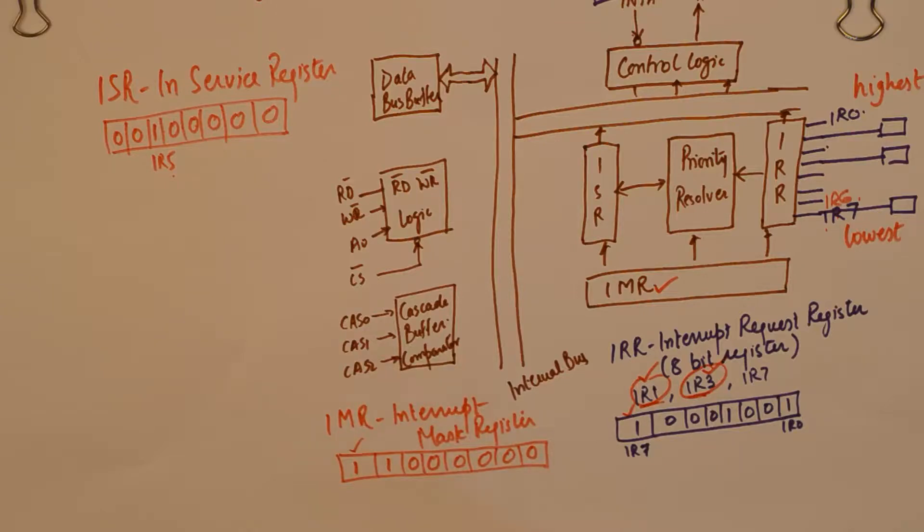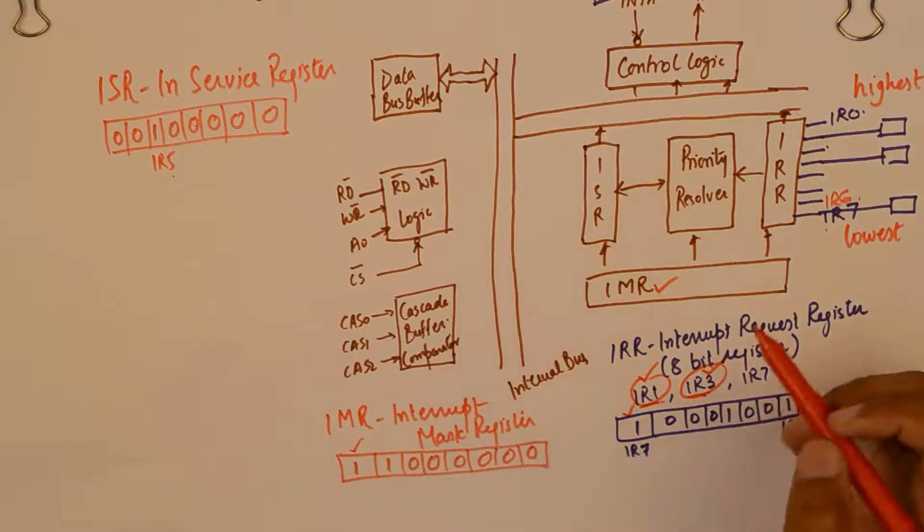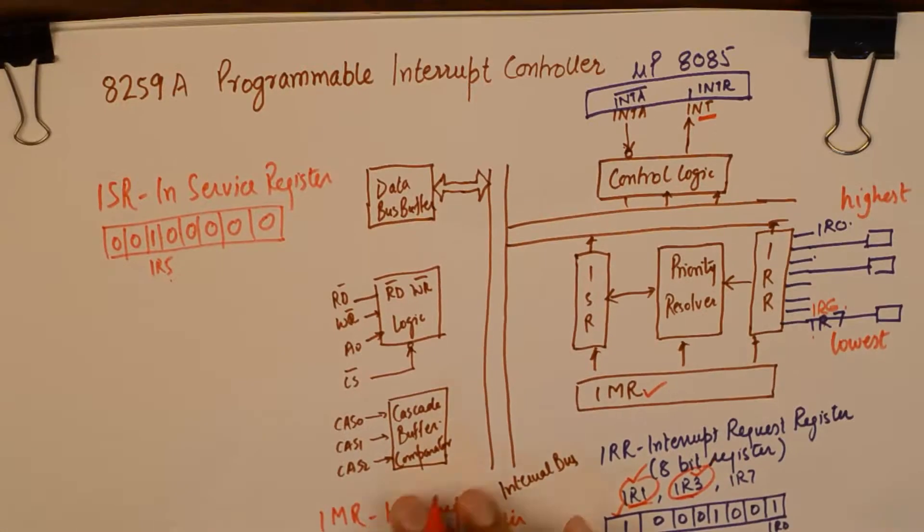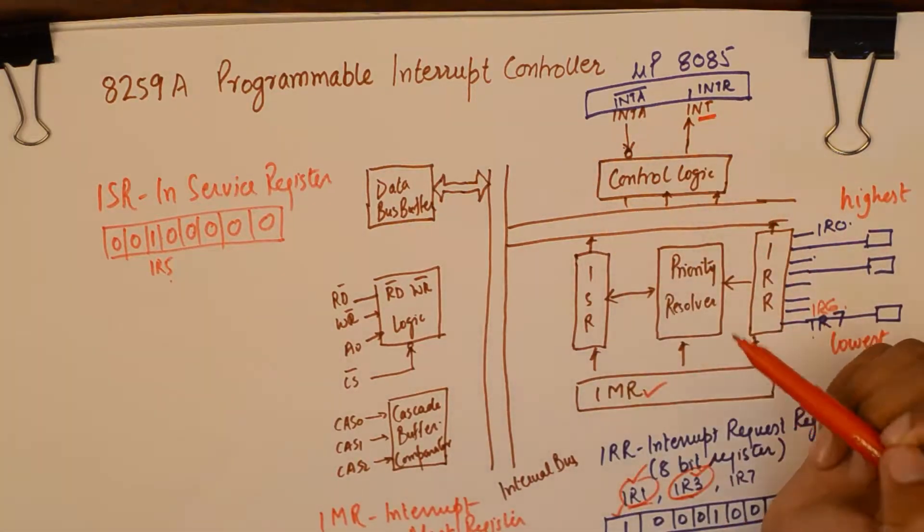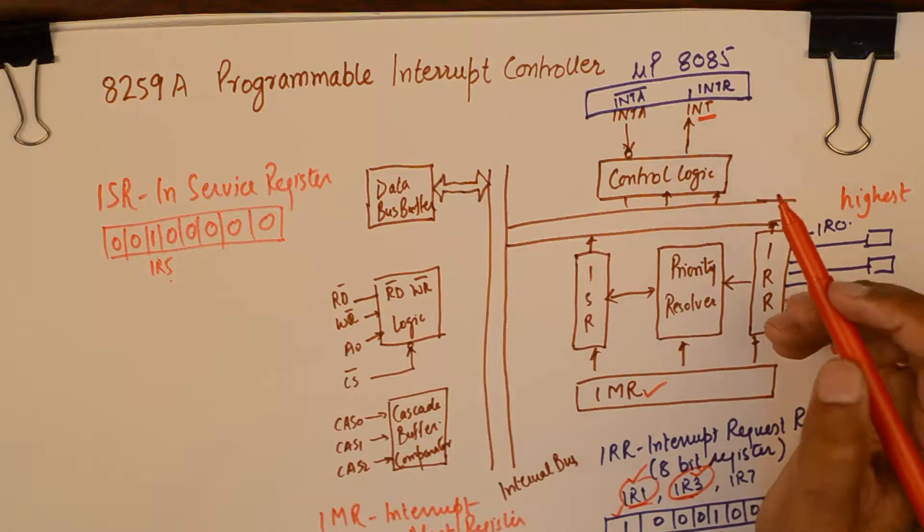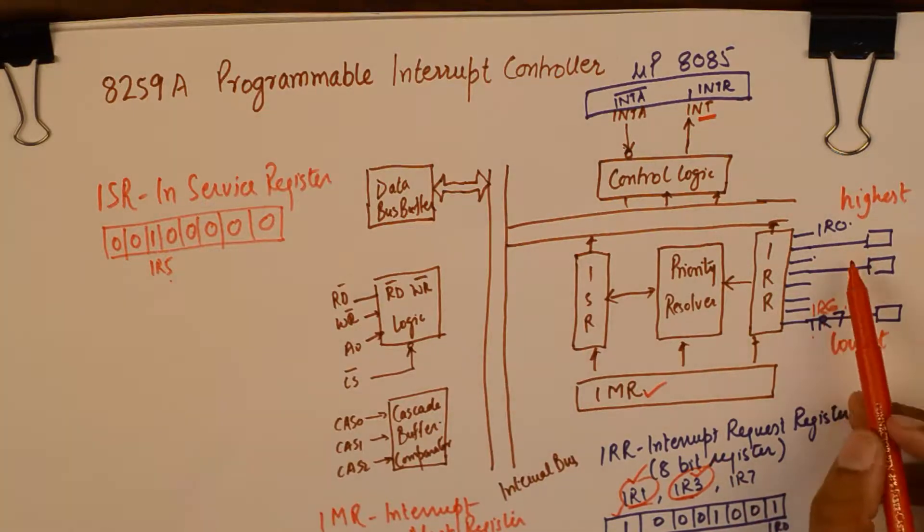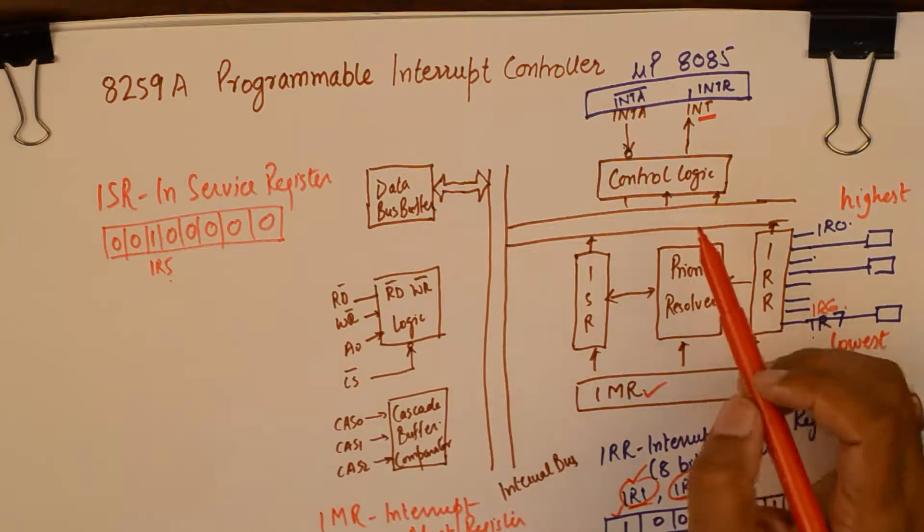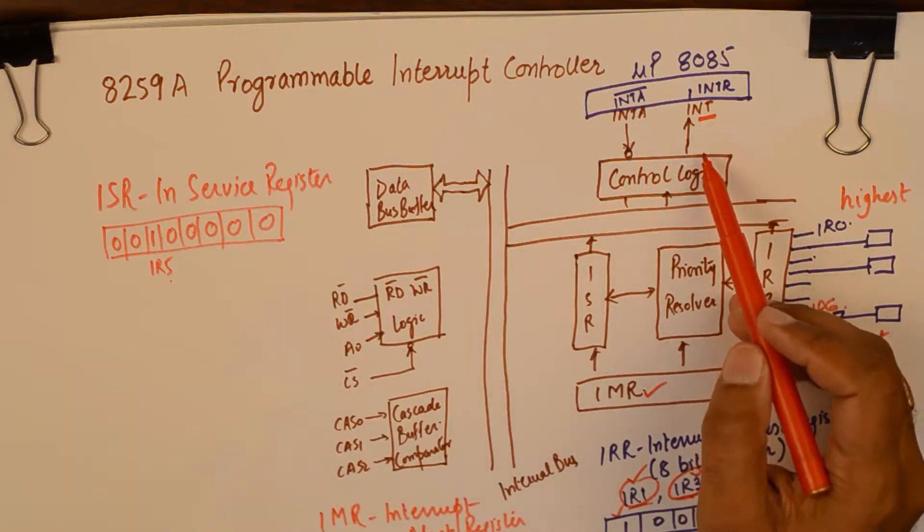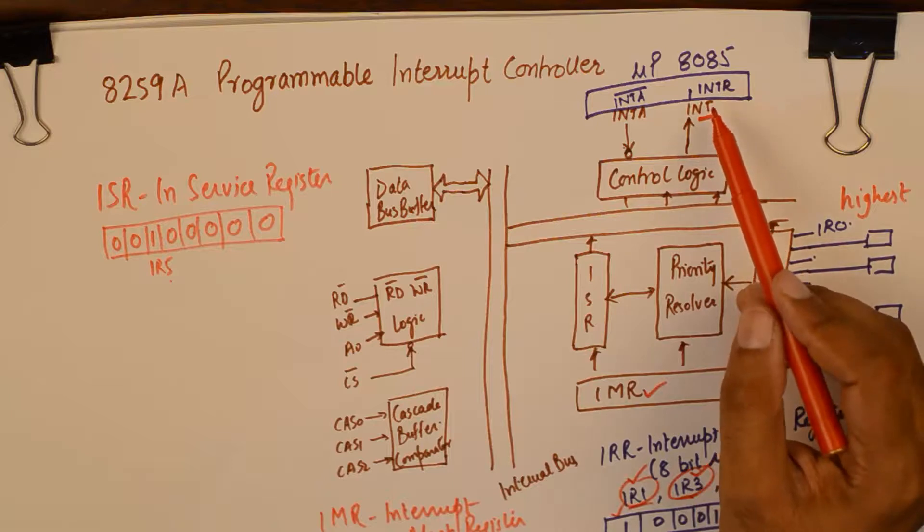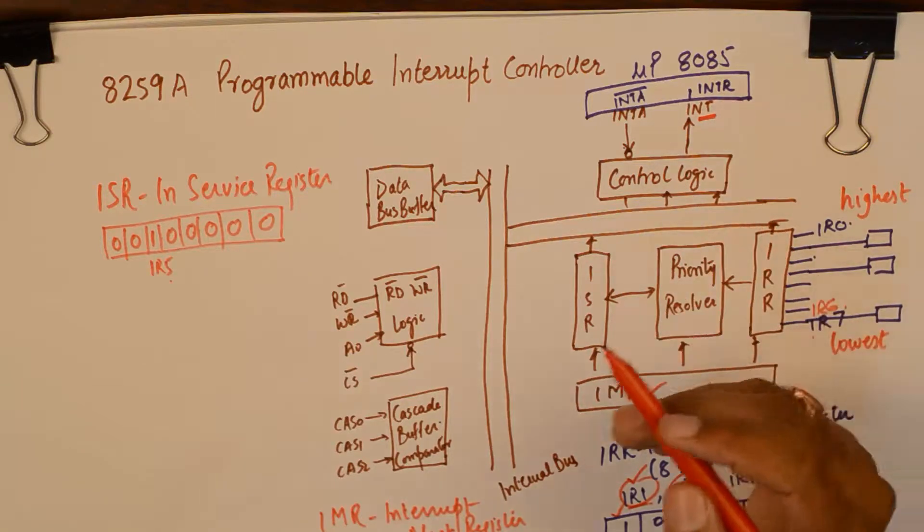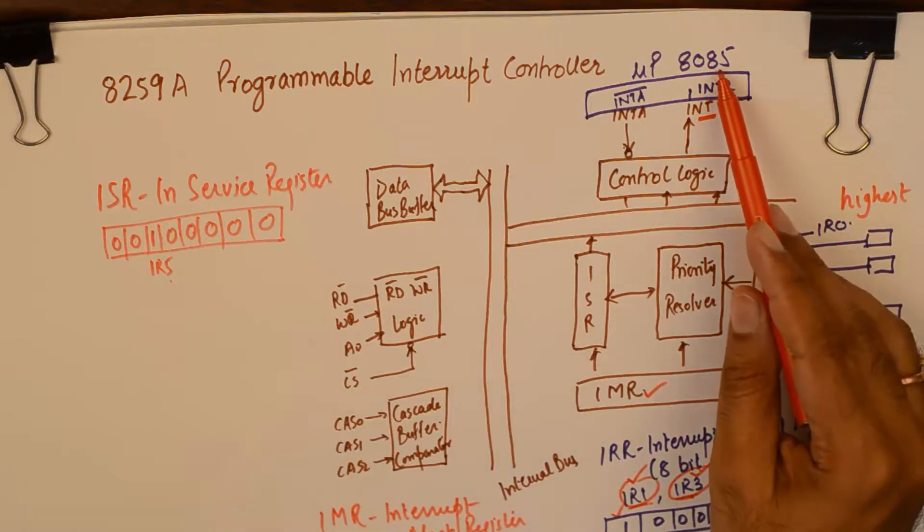Now comes a point where we need to understand that whatever interrupt wins it goes via the INT pin of 8259 and it reaches the INT pin of 8085. Now this is an irony that INT itself is the lowest priority interrupt of 8085 so whatever interrupt wins from the entire battle it moves out of the INT pin of 8259.